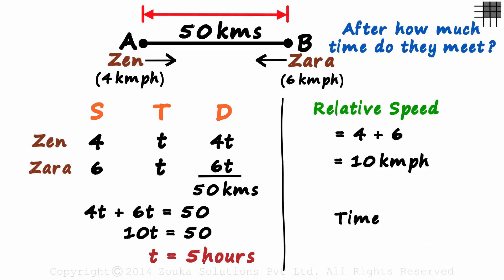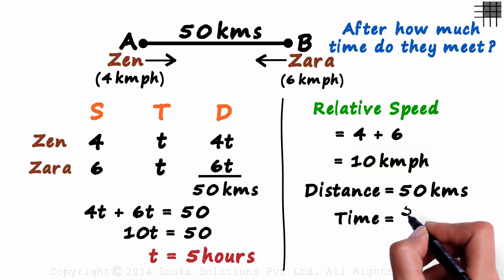It equals the distance between the objects divided by the relative speed. The distance between the objects is 50 kilometers, and the relative speed is 10 kilometers per hour. So the time taken by them to meet will be 50 over 10 or 5 hours.